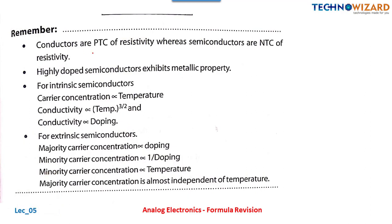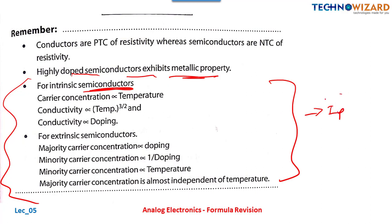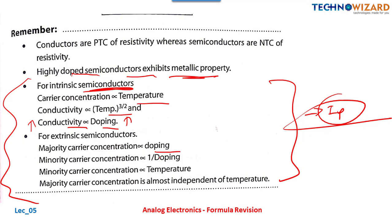Summary of what we have studied: A highly doped semiconductor exhibits metallic properties. For intrinsic semiconductors: carrier concentration is directly proportional to temperature; conductivity is directly proportional to T^(3/2); conductivity is directly proportional to doping. For extrinsic semiconductors: majority carrier concentration is directly proportional to doping; minority carrier concentration is inversely proportional to doping; minority carrier concentration is inversely proportional to temperature and is almost independent of temperature. Please remember these points — very very important.